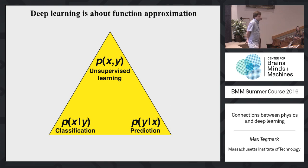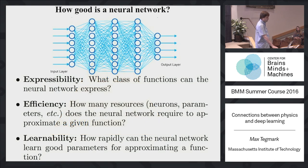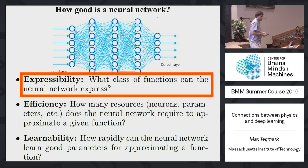So how good is a neural network at approximating functions? It breaks down into three parts. The first is expressibility, so what class of functions can it express? And then the second is efficiency, how many resources you need to do this. And the third is learnability, how rapidly can this network actually learn good parameters for approximating the function? And I'm going to talk about the first two, mainly the second.